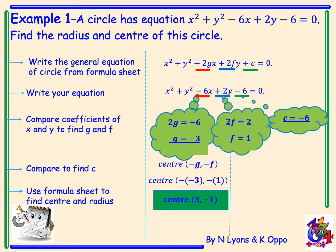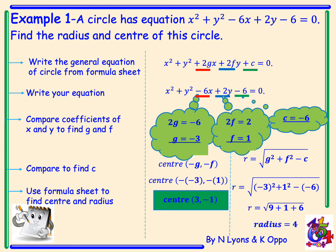The last thing we have to do is use the formula sheet to find the radius. The formula for the radius is the square root of g squared plus f squared minus c. So it's negative 3 squared plus 1 squared minus minus 6, giving the square root of 9 plus 1 plus 6, which is the square root of 16, giving a radius of 4.